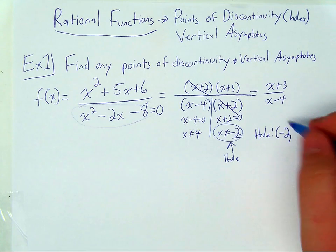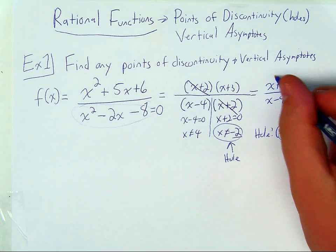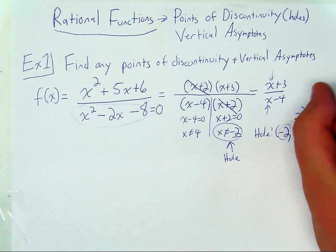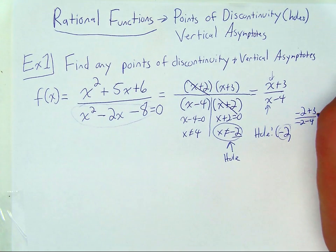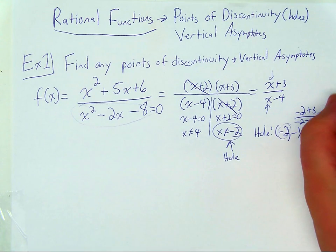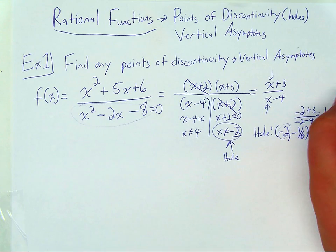To find the y-coordinate, I'm going to take the negative two and substitute it into what's left. So I'm going to do negative two plus three over negative two minus four, which is going to give me positive one over negative six, which is negative one sixth. So there's a hole at negative two, negative one sixth.